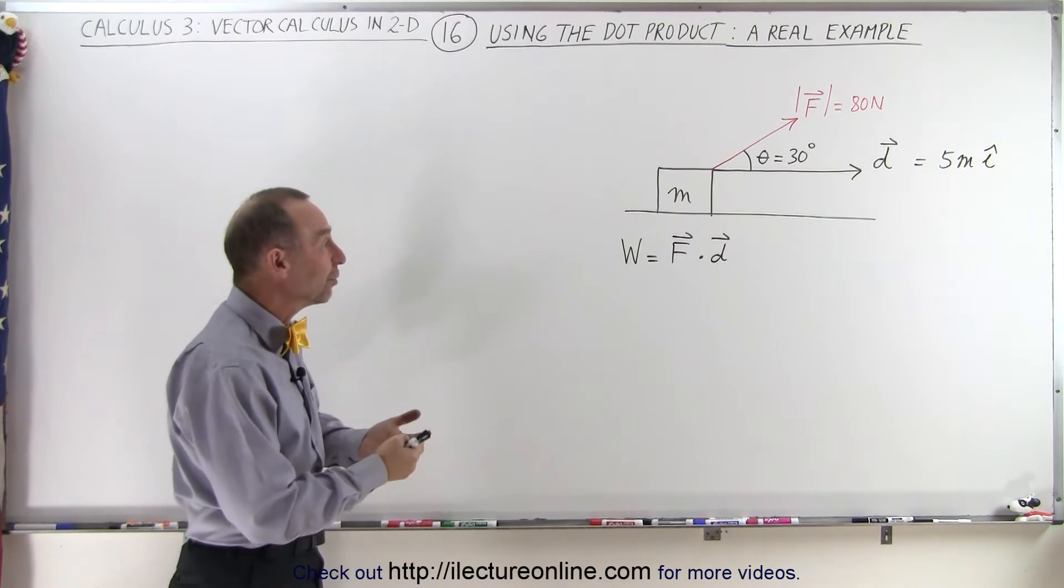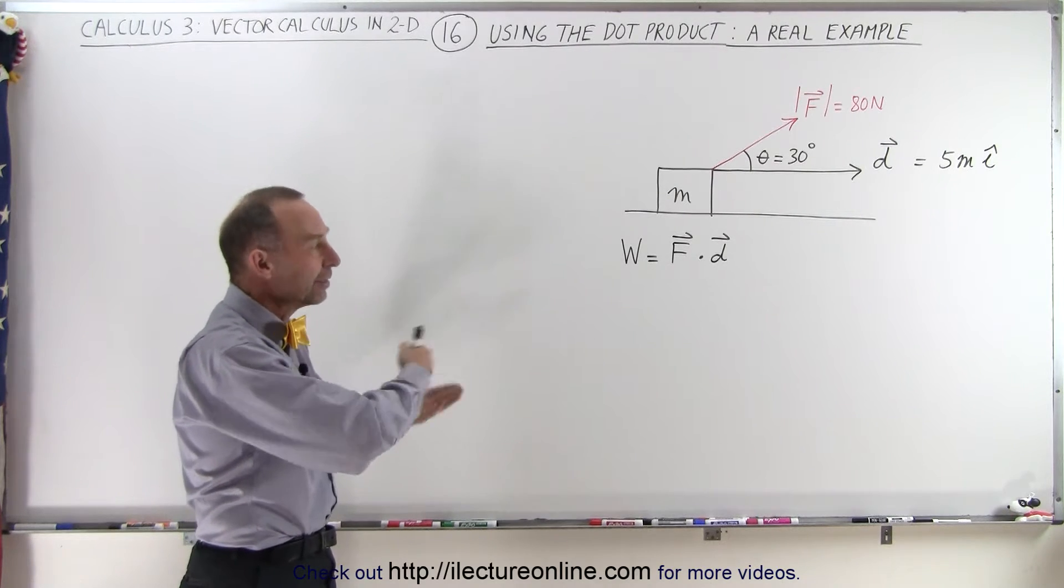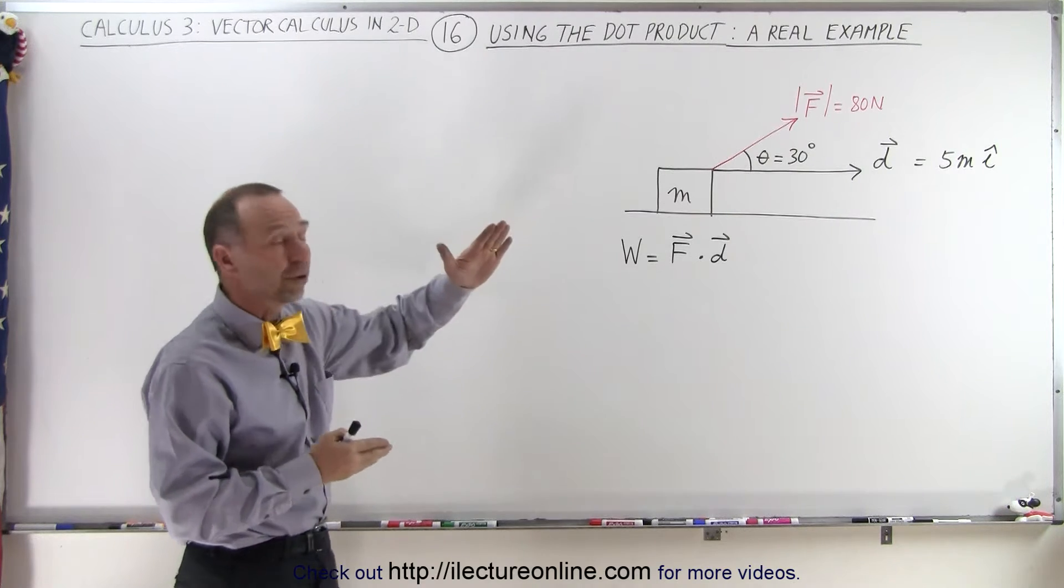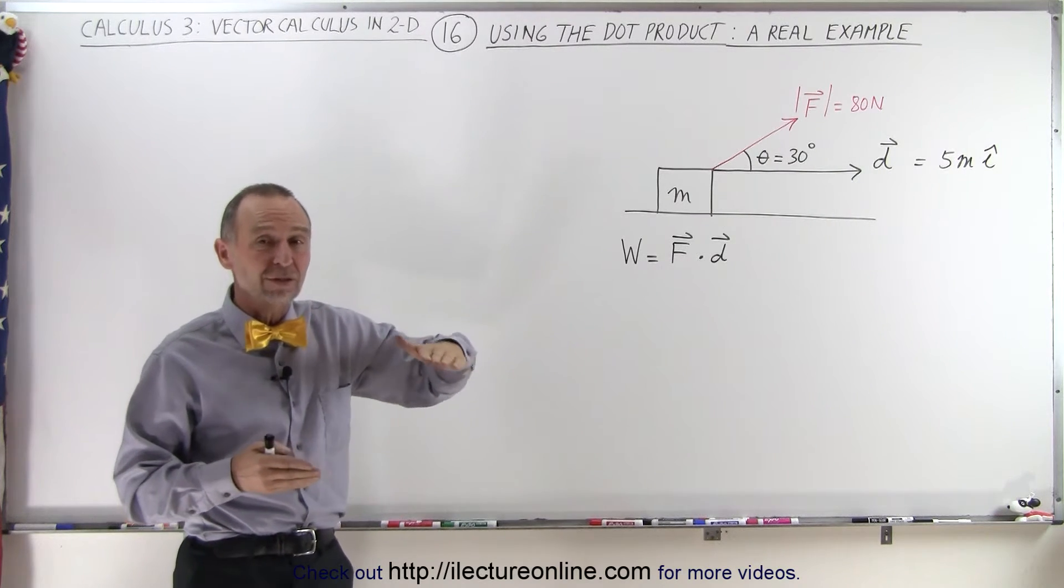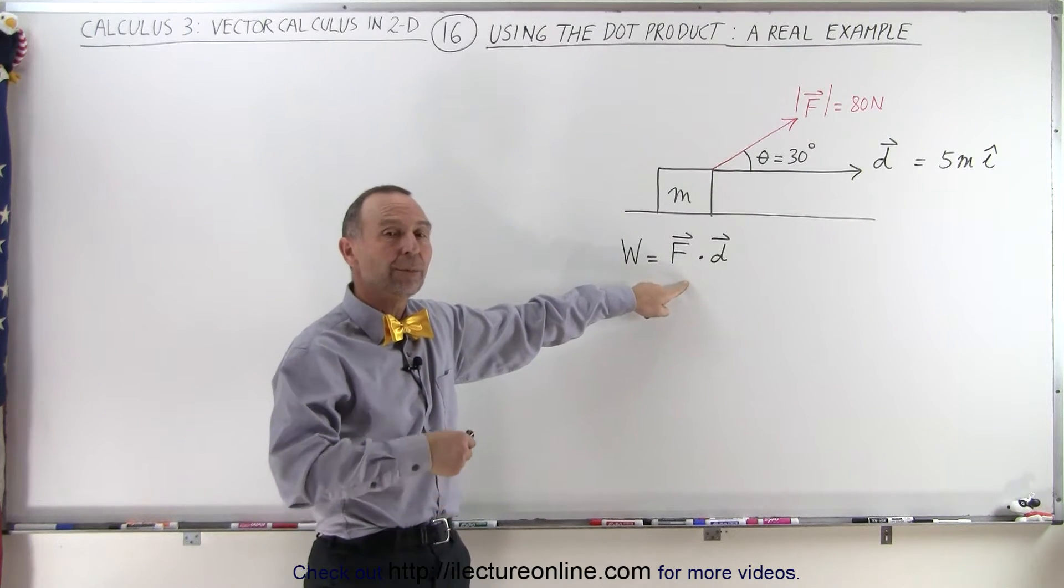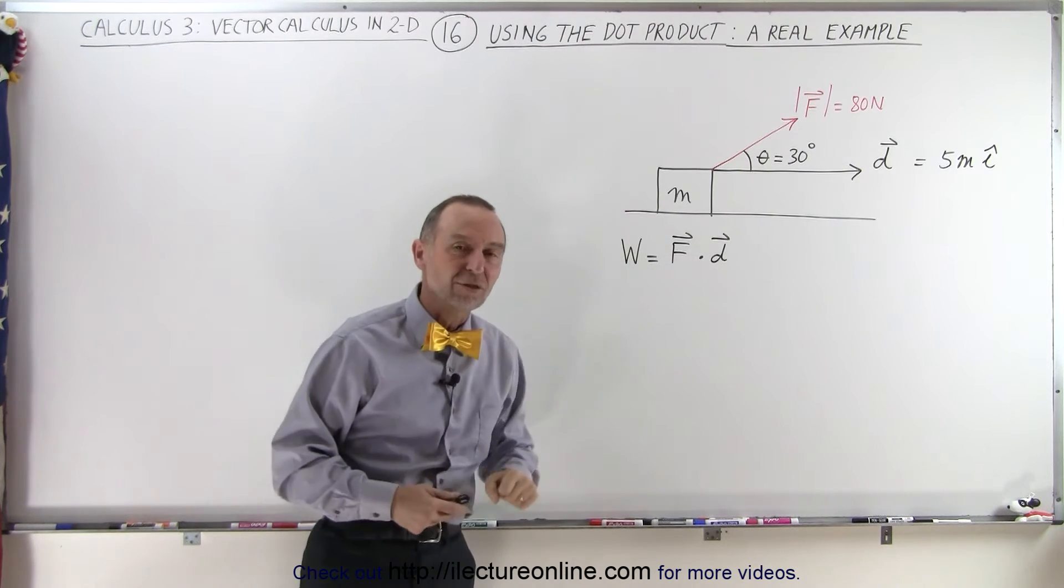One example is figuring out how much work is done by a force acting on an object, displacing it a certain distance. Assuming the direction of the force is not the same as the direction of the displacement, the work done can be found by executing the dot product of the force times the displacement.